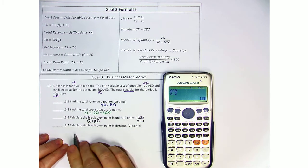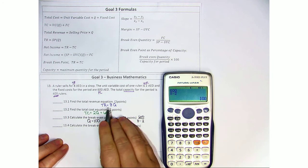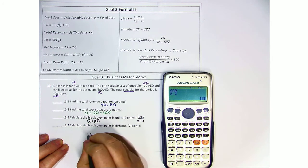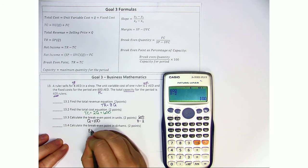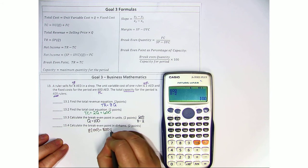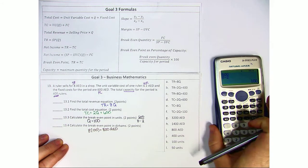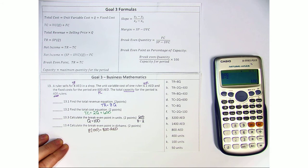The final question says, calculate the break-even point in dirhams. Once you get the quantity in units, you just have to plug it into one of these two equations. We're going to plug it into TR. So if we do 8 times the quantity we just found, we get 800 dirhams. So let's go ahead and look at how this relates to our multiple choice options.